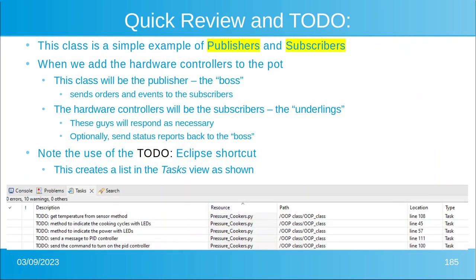This class is a simple example of publishers and subscribers — remember we talked about that concept. When we actually add the hardware controllers, this class will be the publisher, or the boss. It sends orders and events to the subscribers. The hardware controllers would be the subscribers, or the employees — those guys will respond as necessary. Optionally, they would send status reports back to the boss, which would be the pressure cooker class.